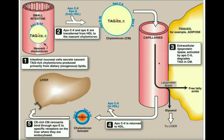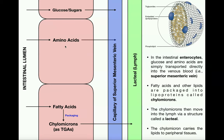The remnants of that chylomicron are ultimately returned to the liver. Yes, it takes a very long time relative to glucose and amino acids for fats to reach the liver, but in the process of circulating throughout the body, they deliver fatty acids to peripheral tissues such as adipocytes and skeletal muscle cells. Once the chylomicron remnant returns to the liver, anything left over — cholesterol, remaining free fatty acids, and fat-soluble vitamins — is dealt with by liver hepatocytes, which can process and deliver them or their products to the rest of the body.